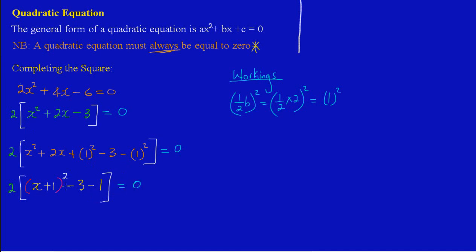The 2 is multiplying everything inside the square brackets. Let me simplify the constant portion: I have negative 3 minus 1, and since the signs are the same I add and keep the sign, giving negative 4. So now I have 2 times open square bracket, open bracket x plus 1 close bracket all squared, minus 4, close square bracket, and that equals zero.